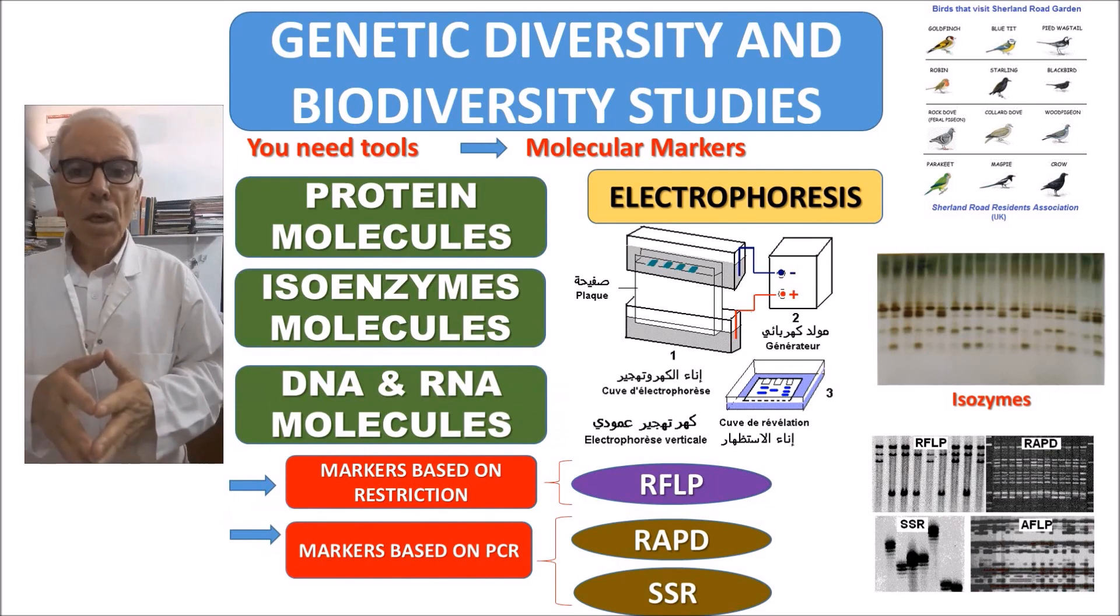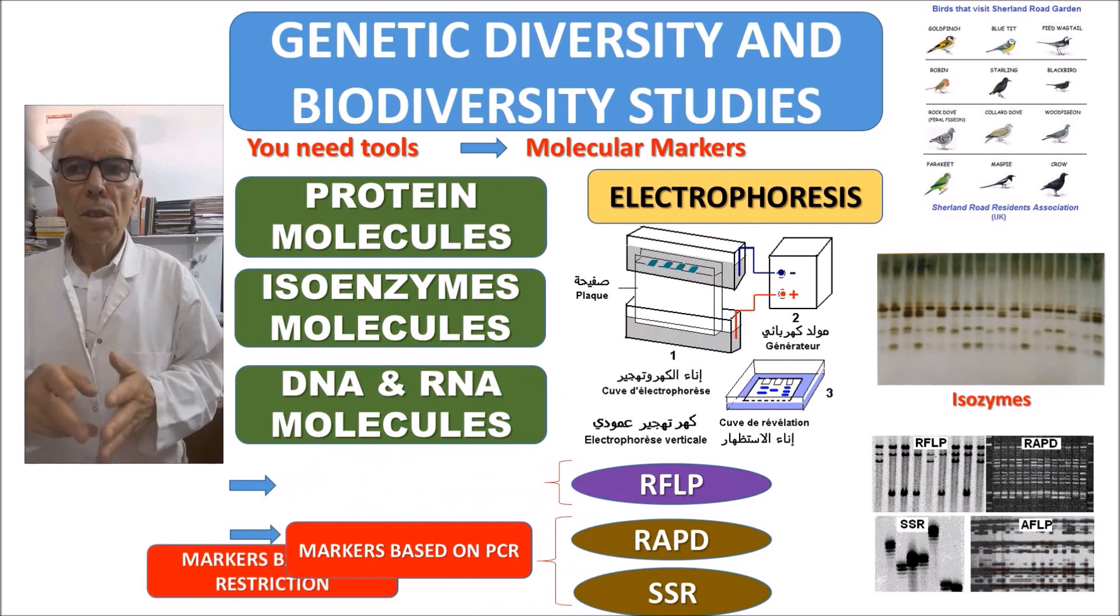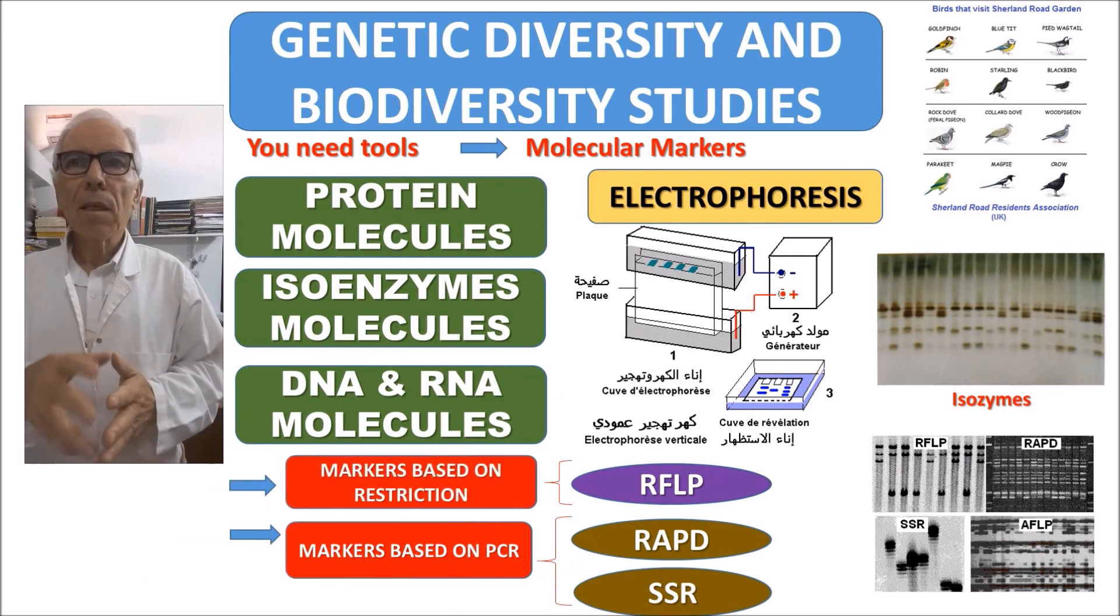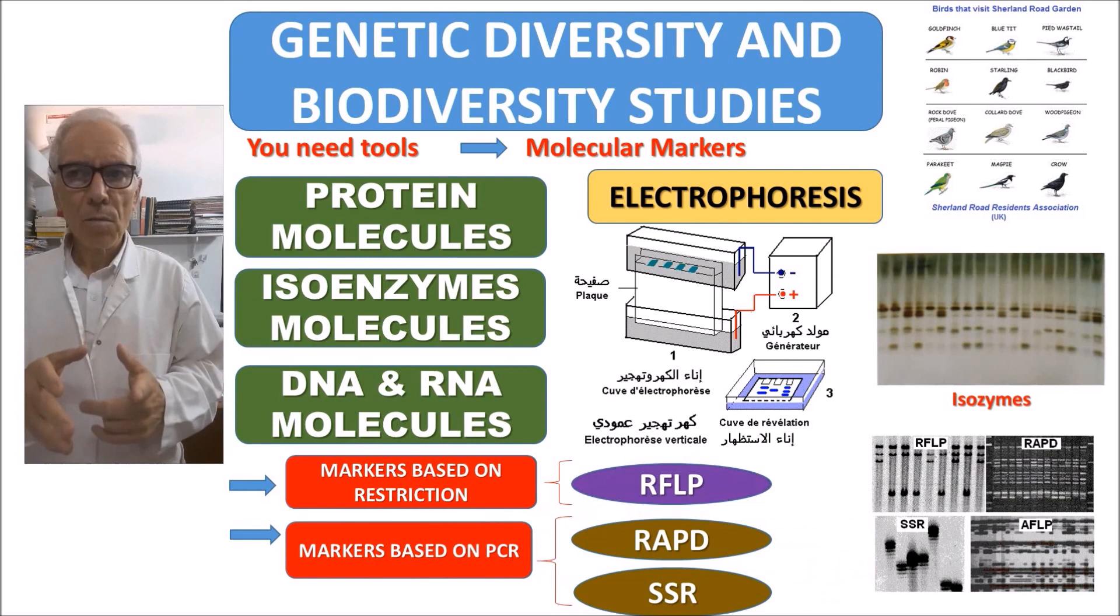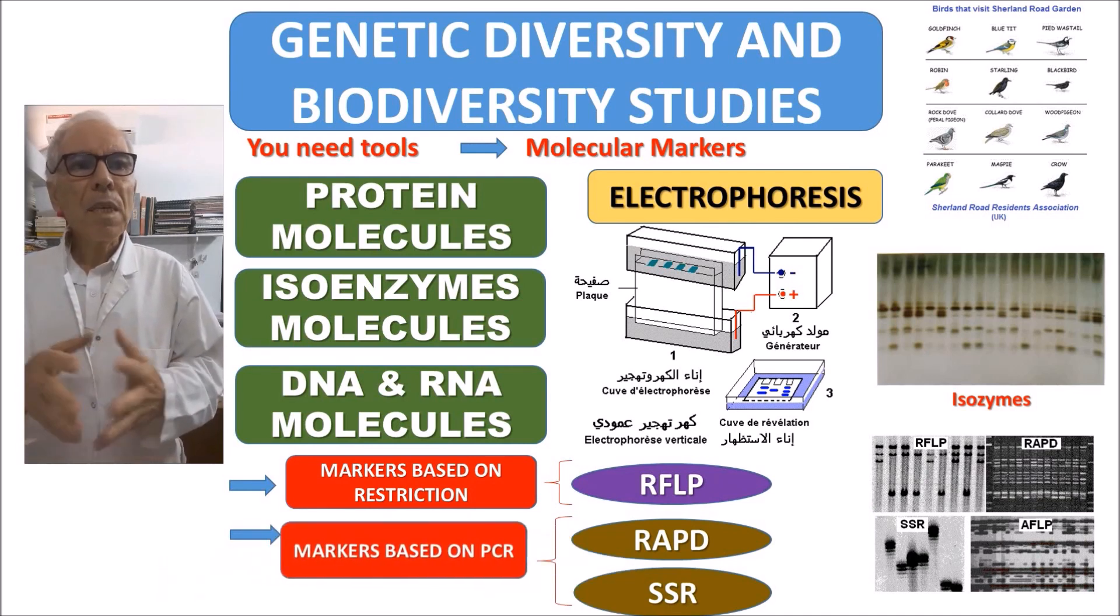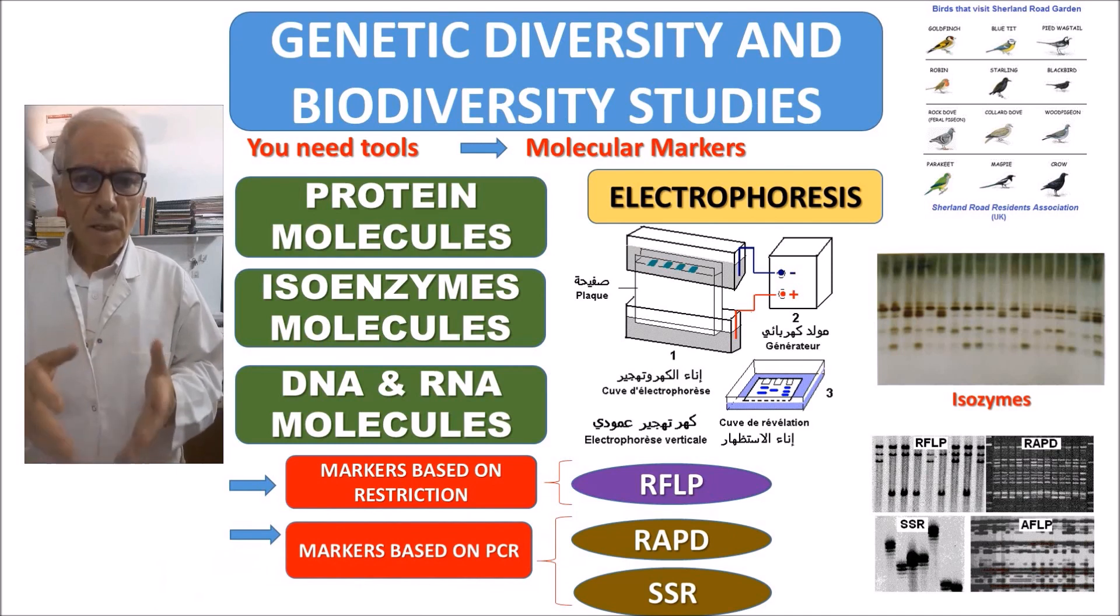You also have DNA and RNA molecules that constitute molecular markers. In this field we can distinguish markers based on restriction. You know we cut DNA with restriction enzymes and we obtain fragments of DNA. We obtain what we call RFLP markers - restriction fragment length polymorphism.